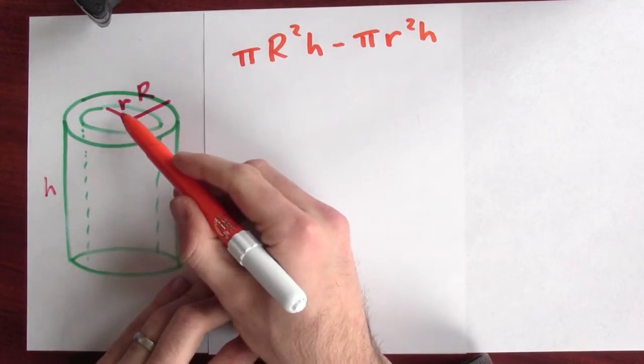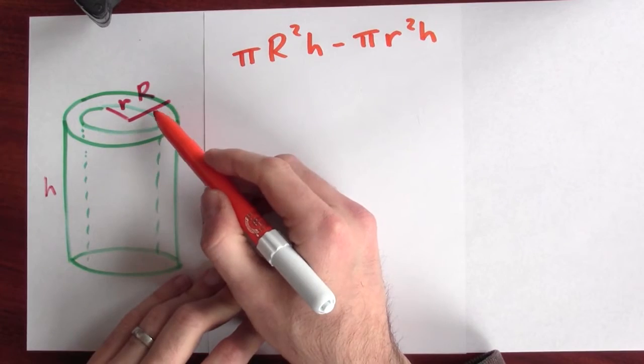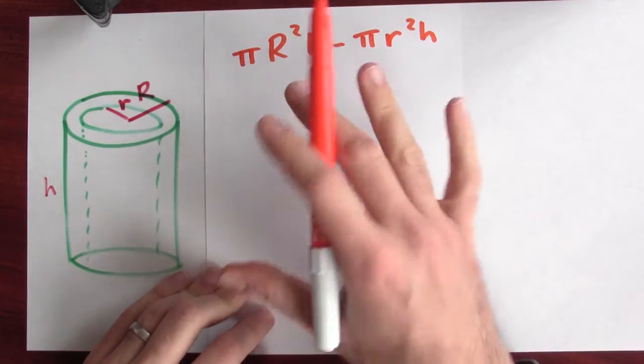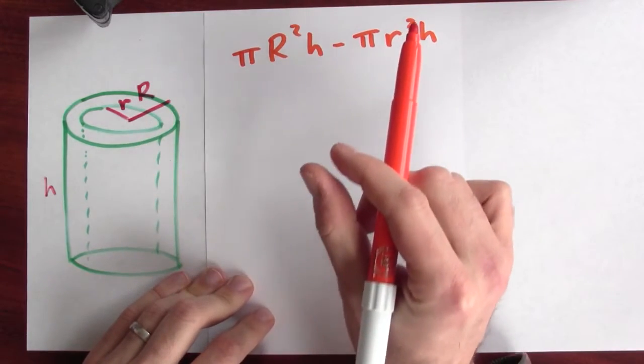But here's the difference. Little r is really close to big R. I'm thinking of the difference as dr, a very thin walled cylinder.